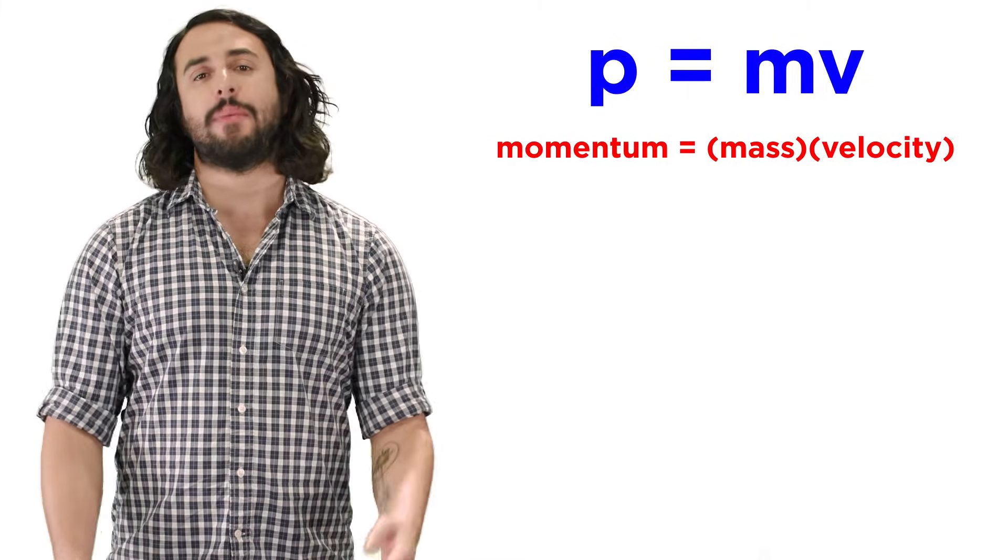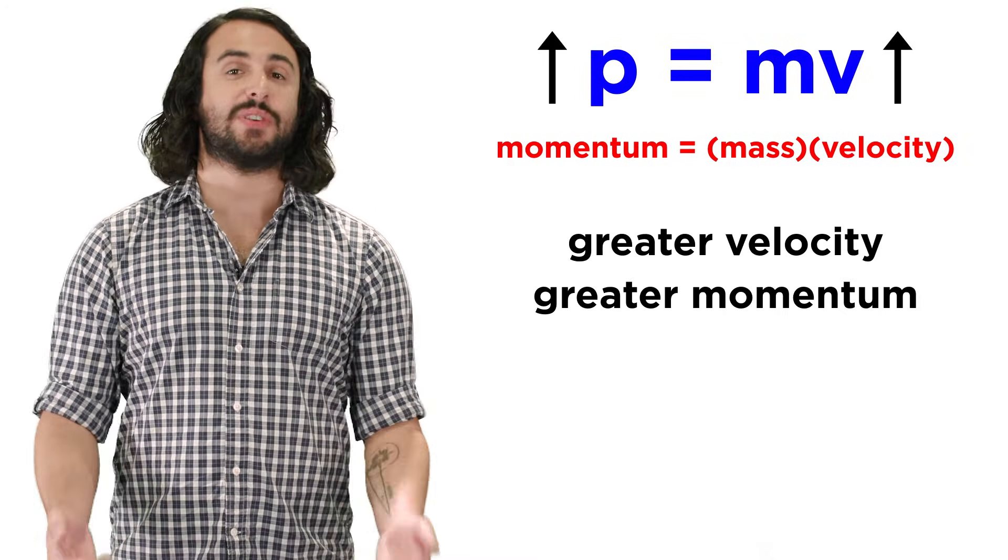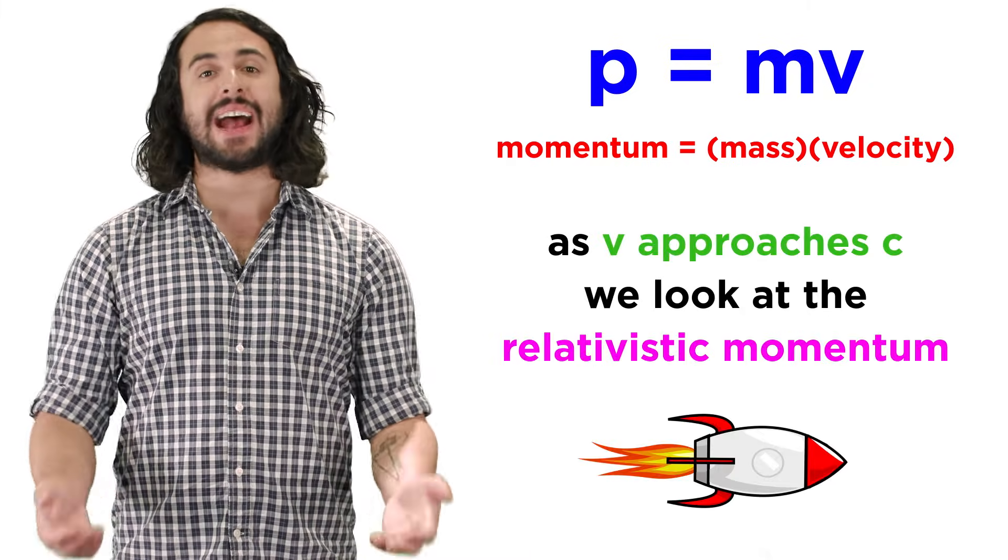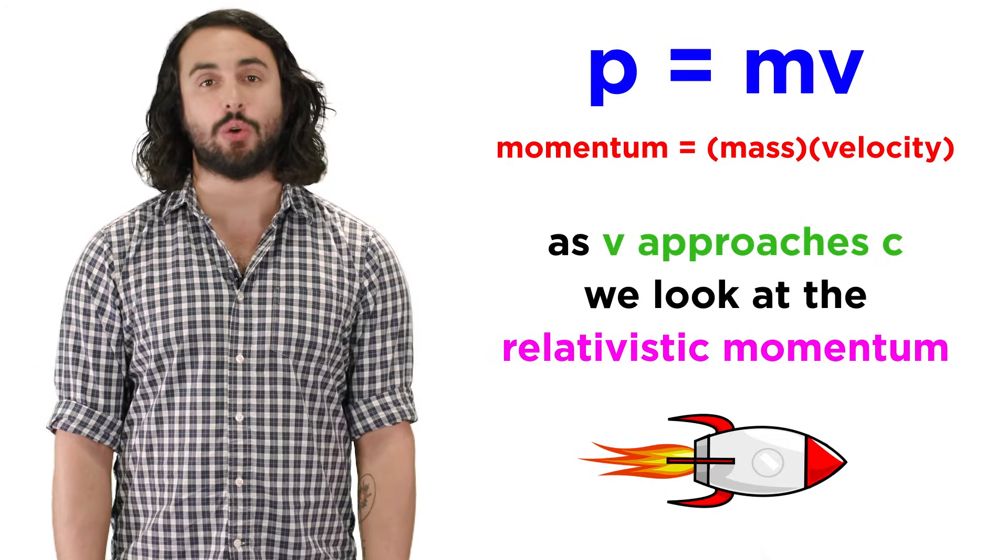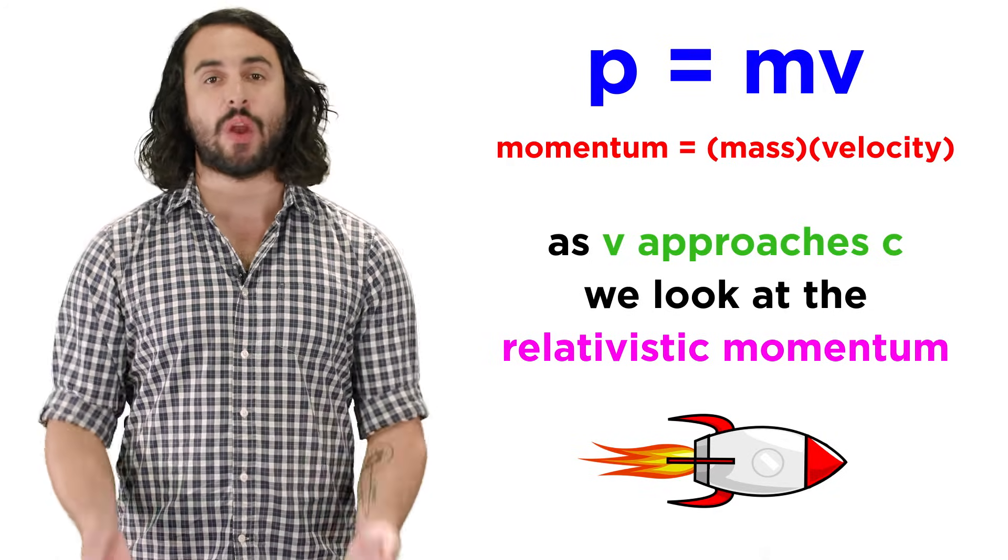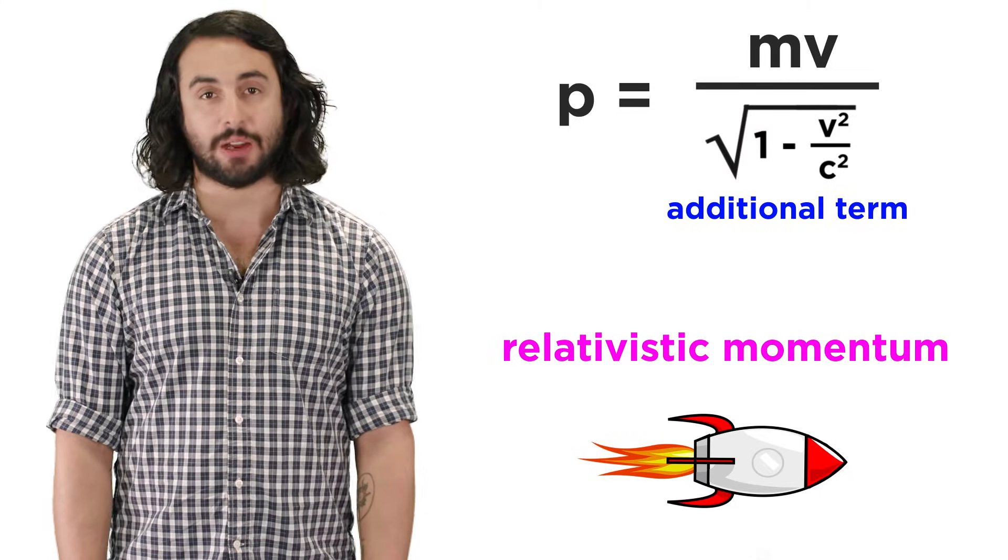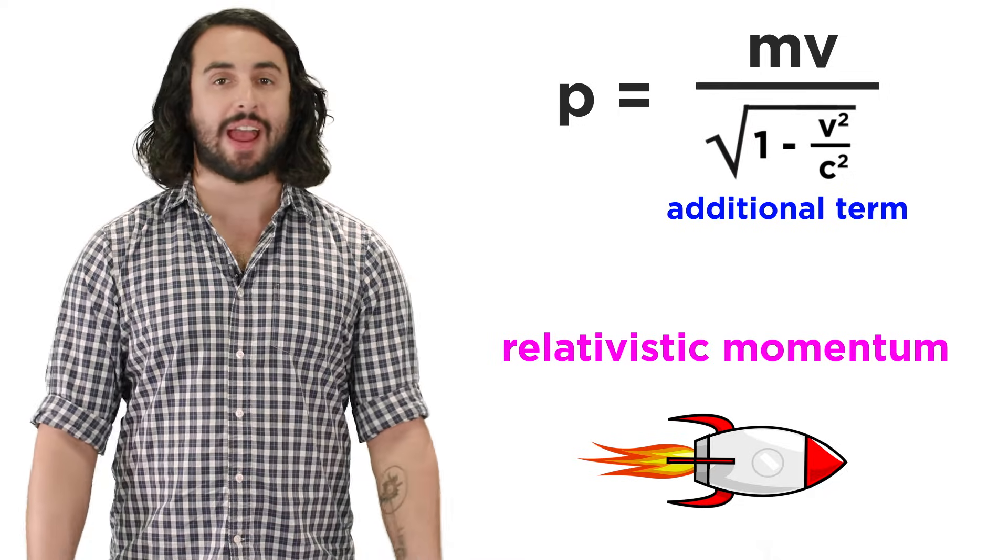We know that momentum is equal to mass times velocity, so as velocity increases, momentum increases, but as velocity approaches the speed of light, relativistic effects take hold, and we have to look at the relativistic momentum. That will involve this additional term here, which should be familiar from the time dilation and length contraction equations.